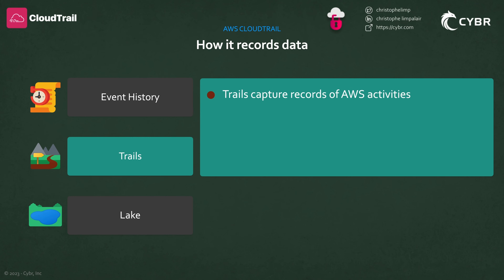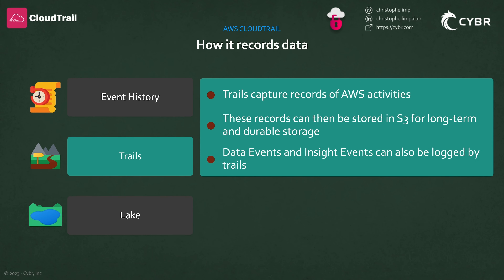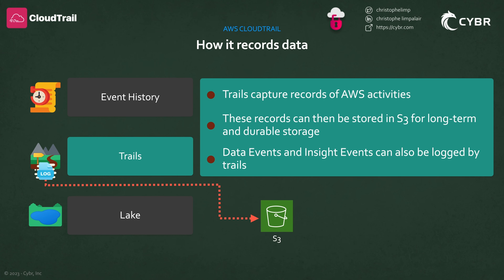It is important to understand that trails are what capture records of AWS activities that you can then store in Amazon S3, instead of just in event history or just for management events. We talked about how management events are stored for 90 days in event history, and you can create a trail to store those management events in a more permanent S3 bucket so that you don't lose valuable data after that 90 days. Data events and insights events can also be logged by trails if you configure that.